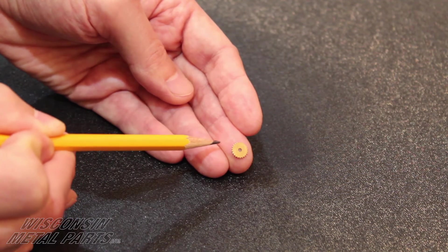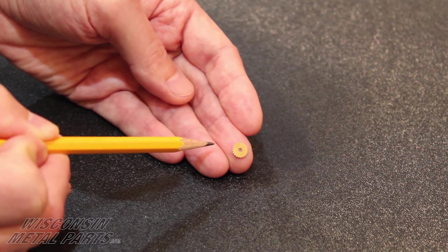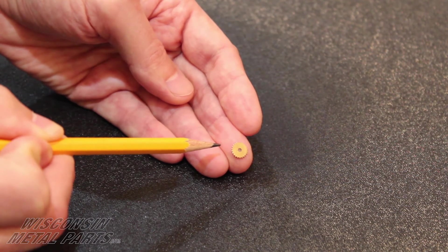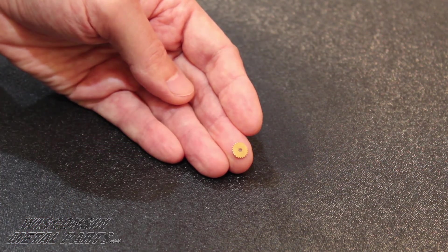So these are very tight tolerance parts that run in our 30 ton brooder at 600 strokes a minute. And we run around 4 million of these annually through our stamping department at Wisconsin Metal Parts.